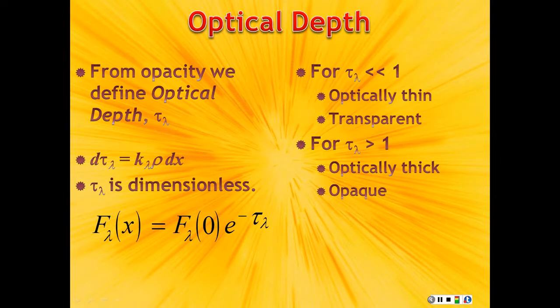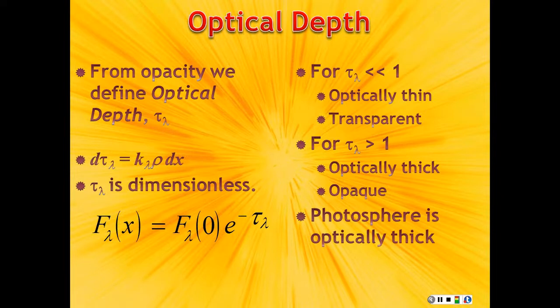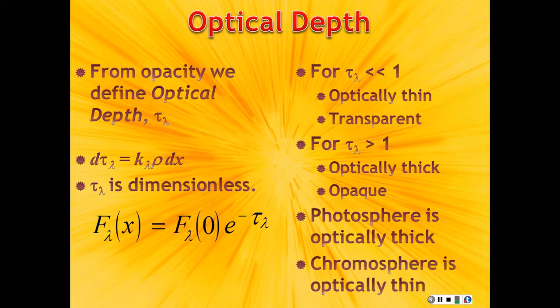So, the photosphere is optically thick, but the chromosphere in the atmosphere is optically thin. So, photons don't make it through the photosphere, they do make it through the chromosphere.